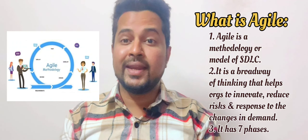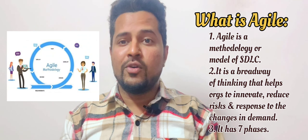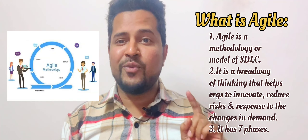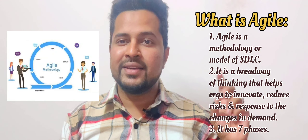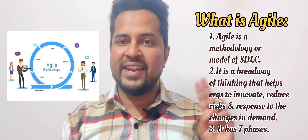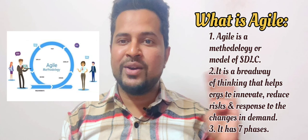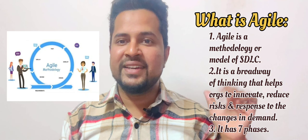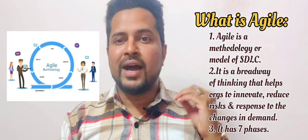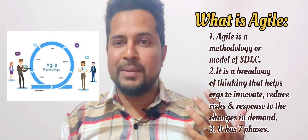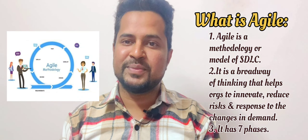Agile has seven phases. The first one is requirements gathering and planning. Second is analysis. Third is designing. Fourth is coding or development. Fifth is testing. After that, deployment, and finally maintenance and support.